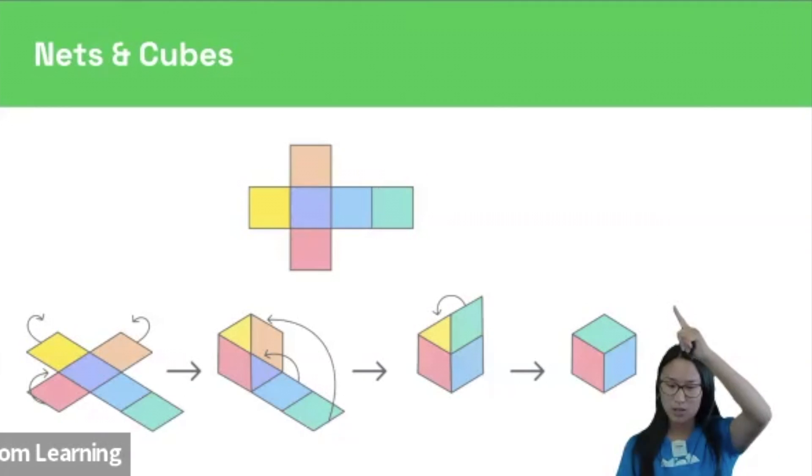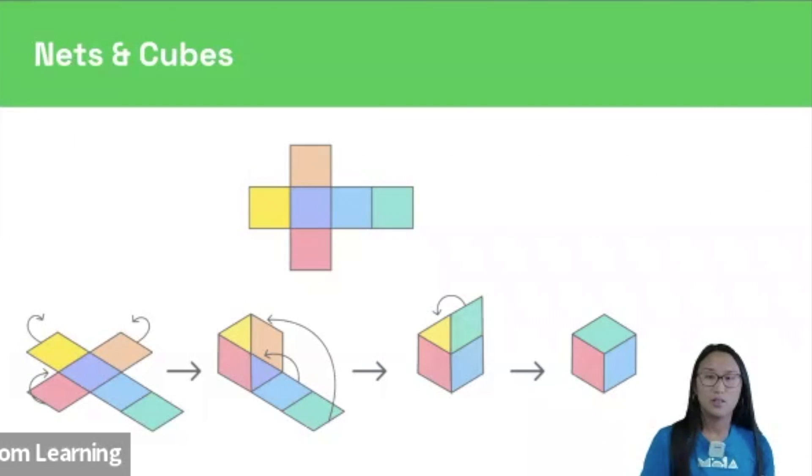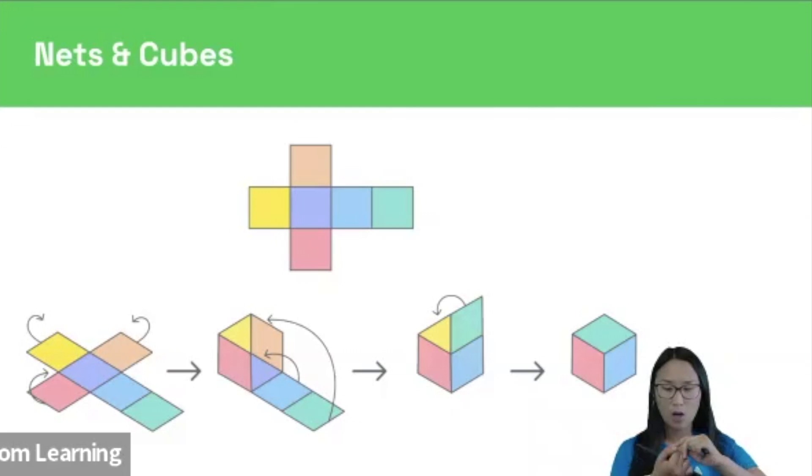So up here we have a net and here we have a cube. In other words, a net is the 2D shape you get when you've unfolded the faces of a 3D shape and then laid them out flat.